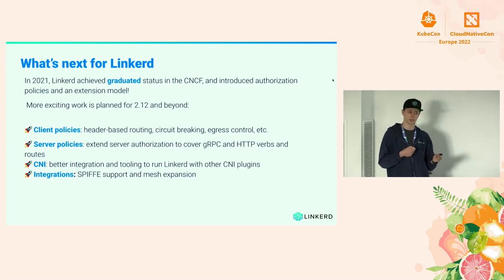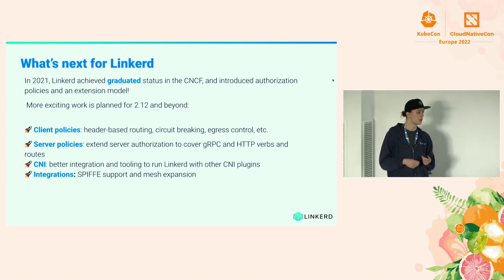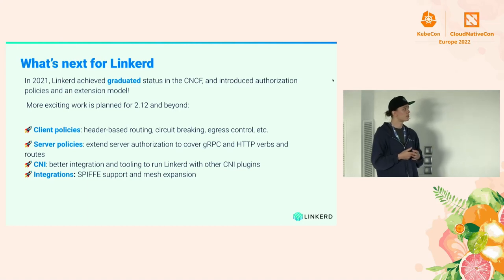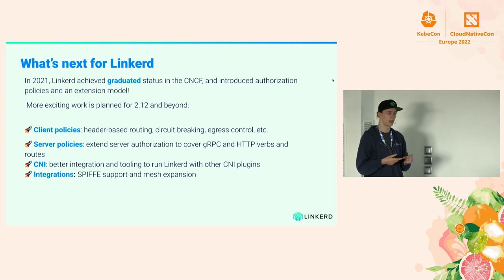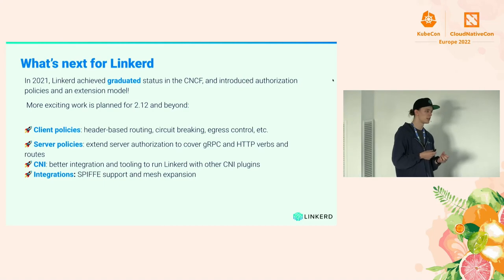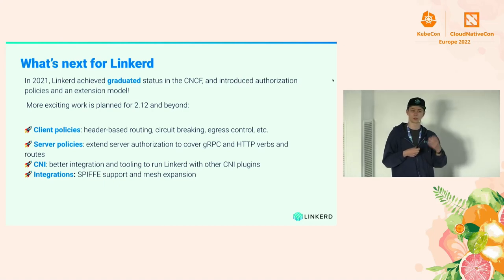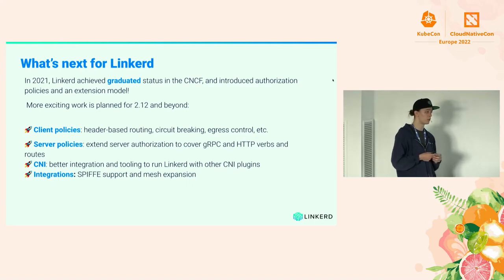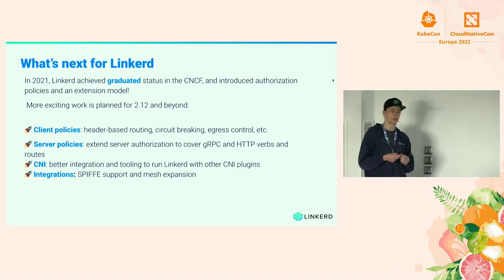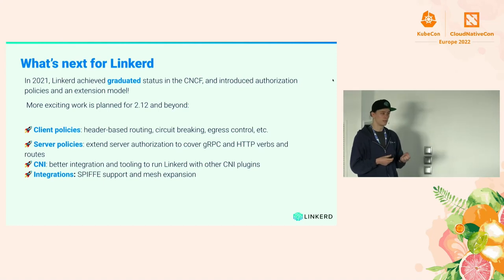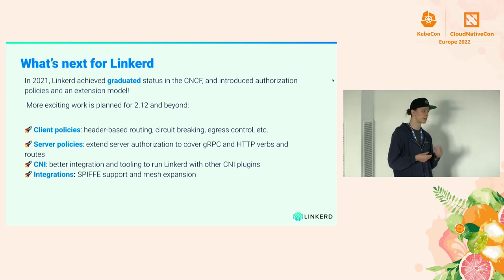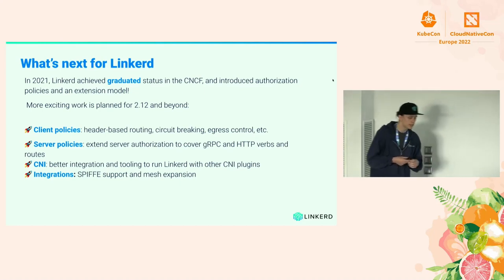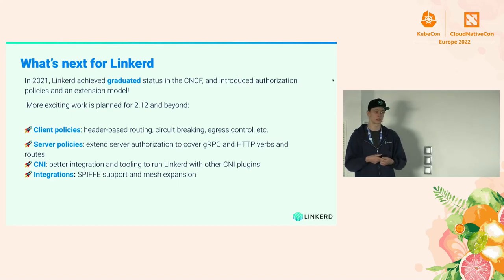Since 2.11 came out, we released two more stable versions — 2.11.1 and 2.11.2 — focused on backporting fixes from edge releases. We also shipped Apache-style logging for the proxy, so you can have NGINX-like access logs, which was requested by the community. We're also working on a log streaming endpoint for the proxy to make debugging simpler. We've also started improving the CNI plugin, and we released a failover controller for multi-cluster, providing an active-passive sort of scenario to increase reliability.